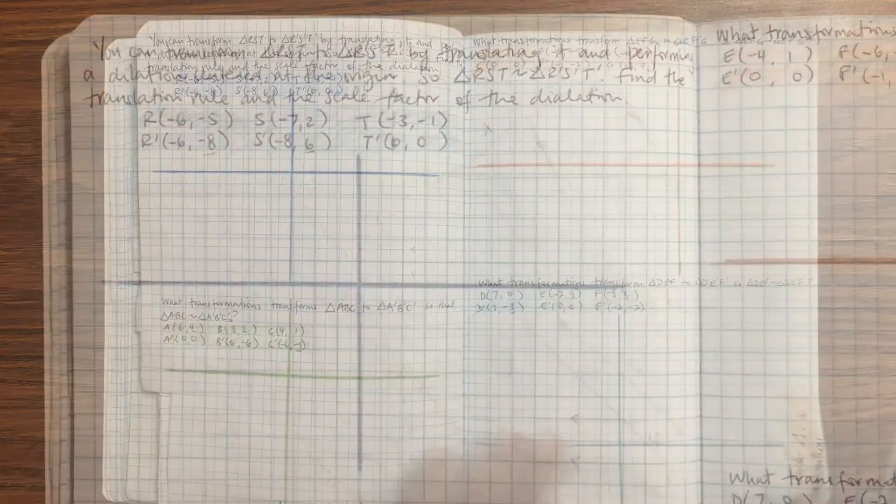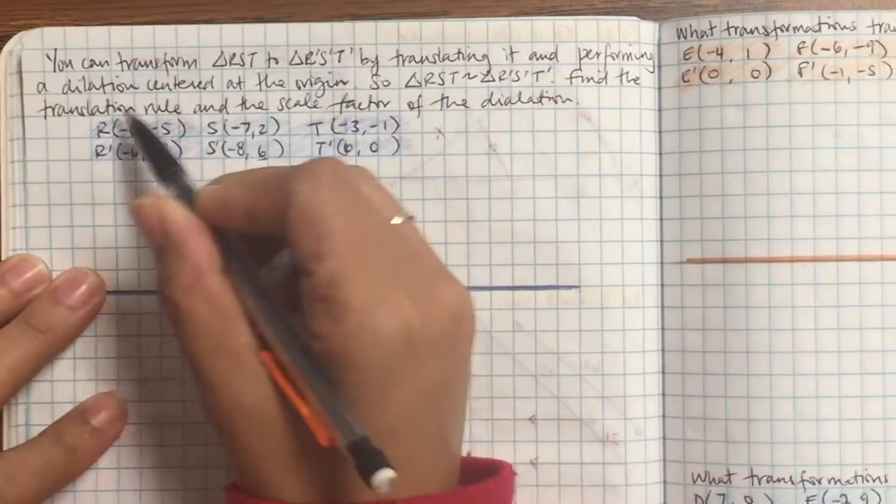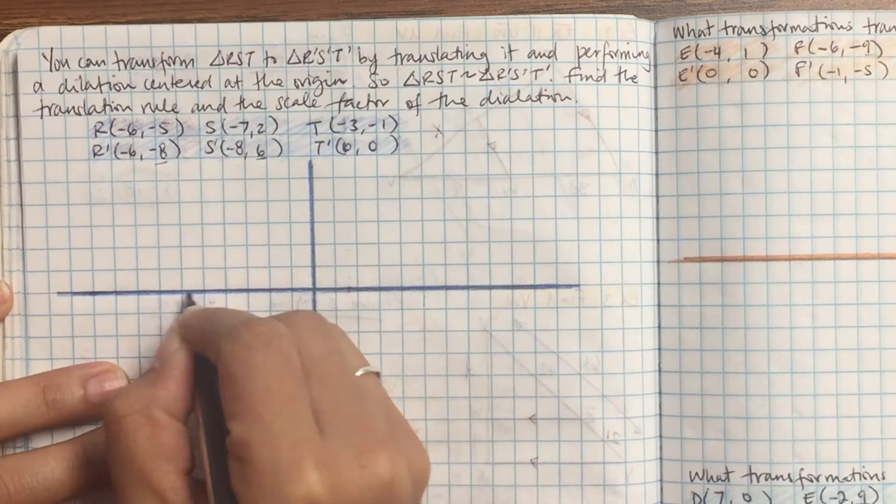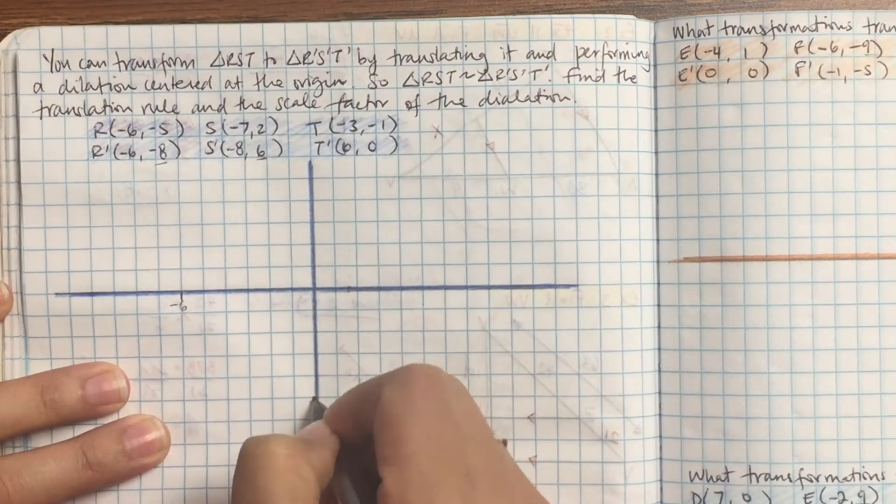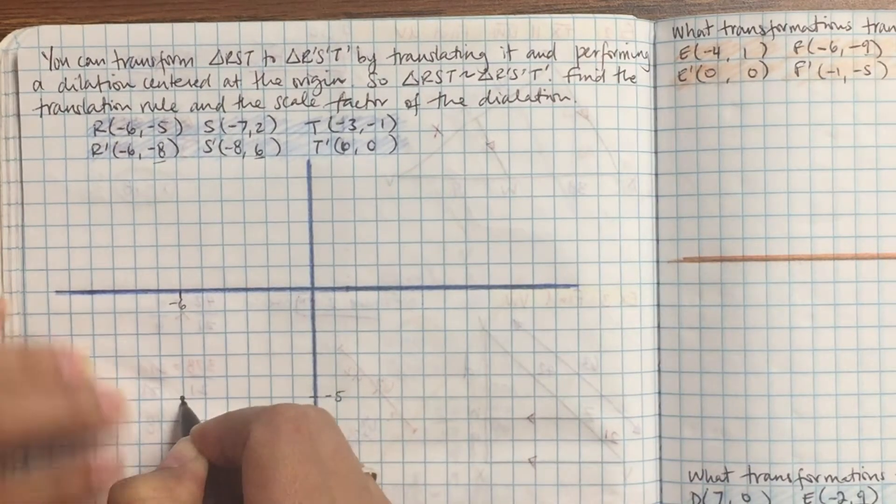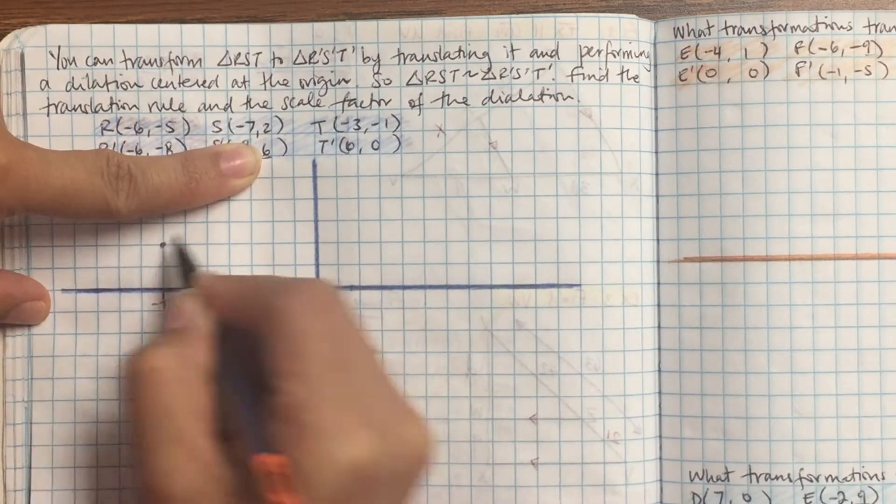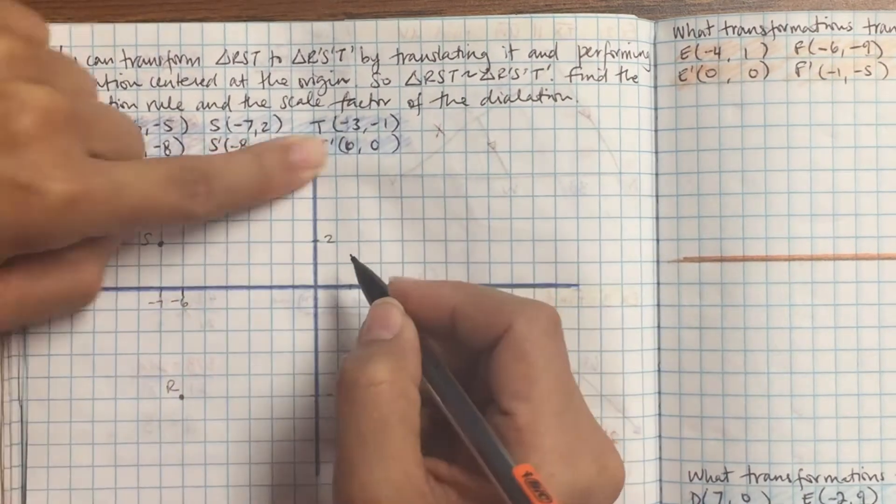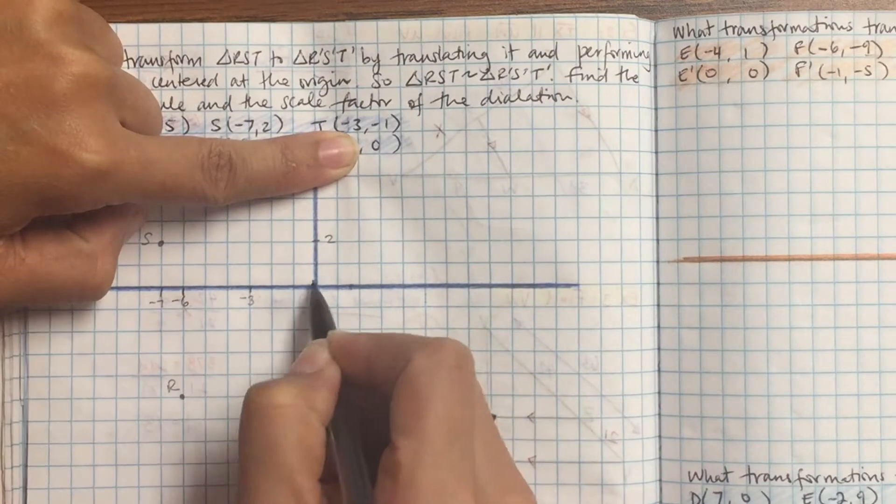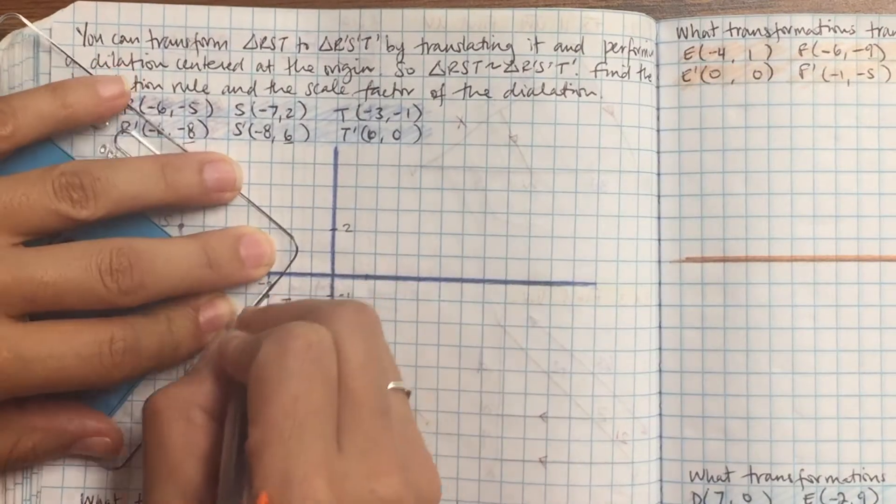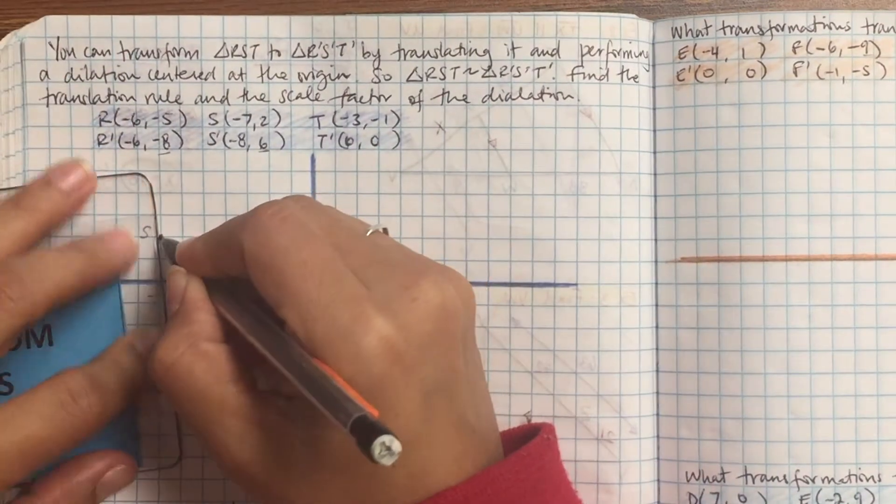If you don't get it to all fit on the page, just use another page and just have it titled the same way. So let's take a look at number 1. You have transformation R of triangle RST to R prime S prime T prime. We're going to go ahead and plot those out and see what happens. So negative 6 negative 5, negative 7 positive 2, negative 3 negative 1, and then join RST so it's a triangle that looks like this.